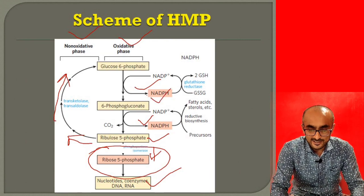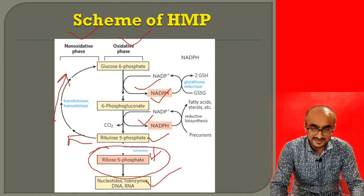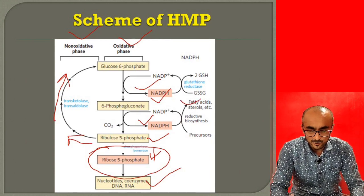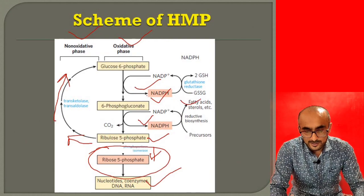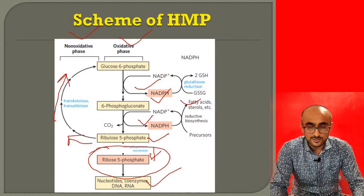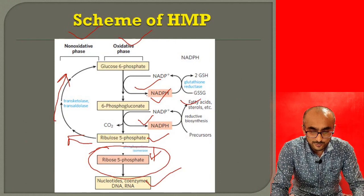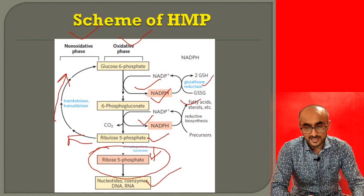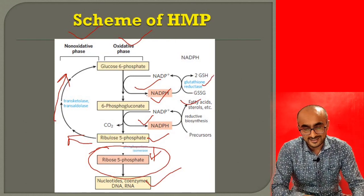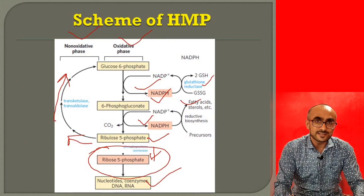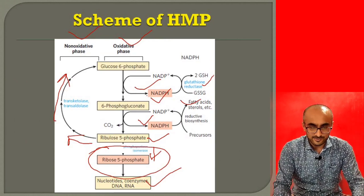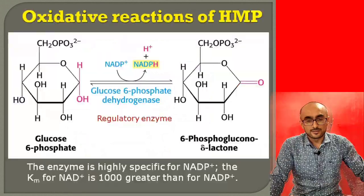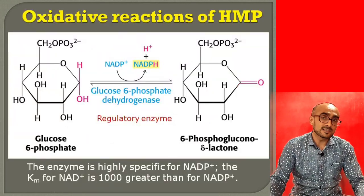The NADPH molecules produced are required for synthesis of fatty acids and steroids. They also help regenerate reduced glutathione from oxidized glutathione via the enzyme glutathione reductase, in order to tackle reactive oxygen species in the cell. There are two phases of reactions in the HMP pathway: the oxidative reaction phase and the non-oxidative phase.